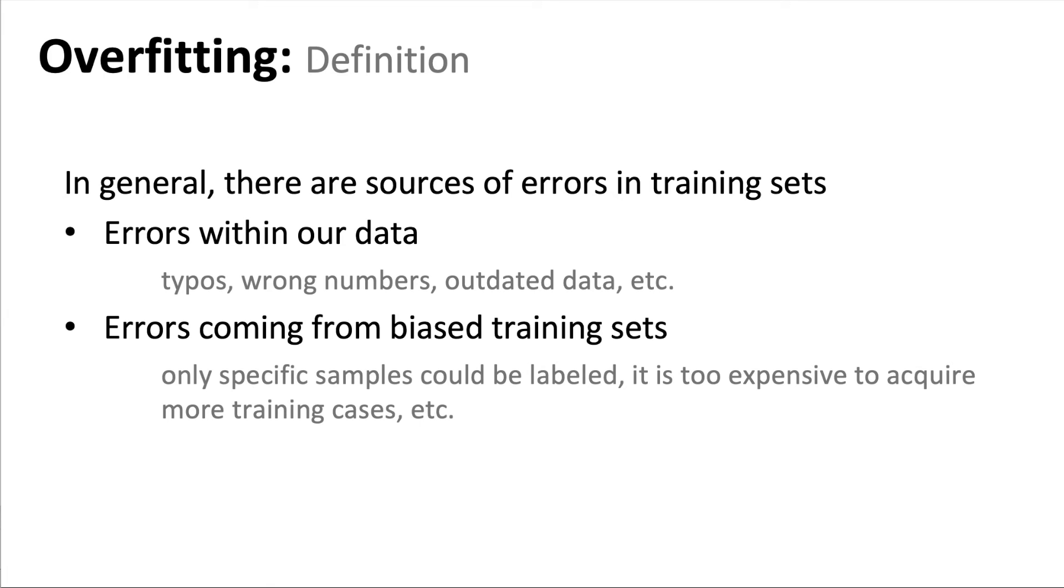So in general, there are sources of errors in training sets. For example, we have errors that comes with our data, typos, wrong numbers, outdated data sources, any kind of errors in the numbers. Also, we have errors coming from biased training sets.